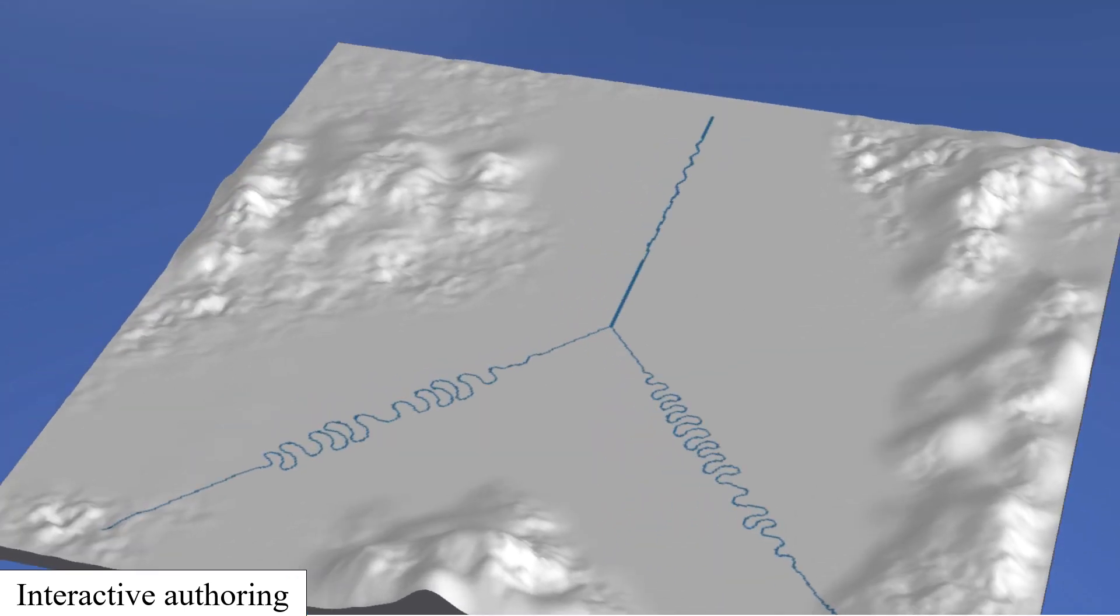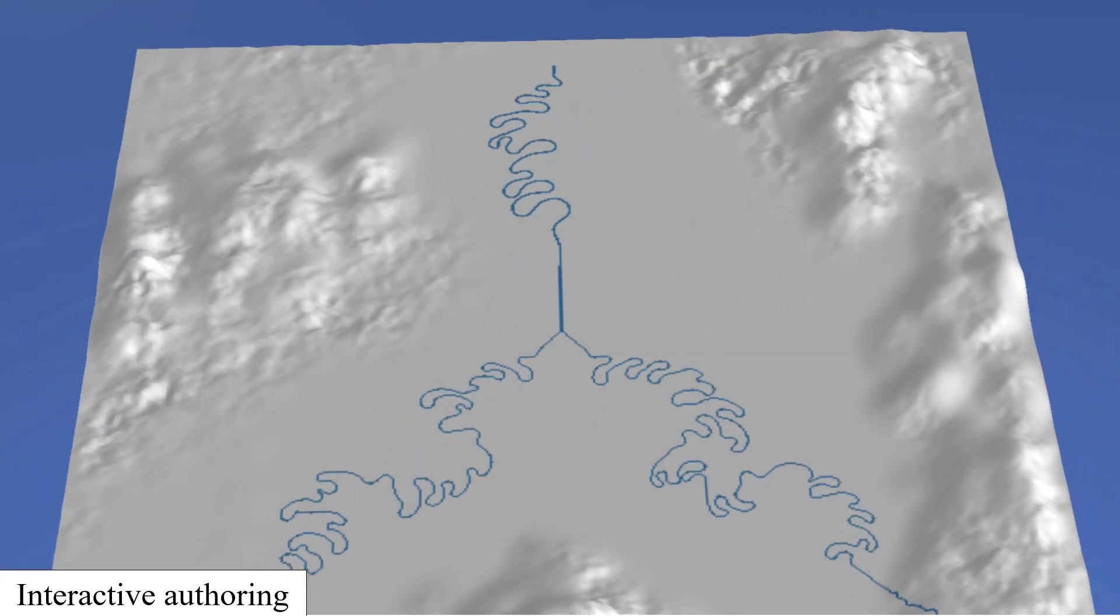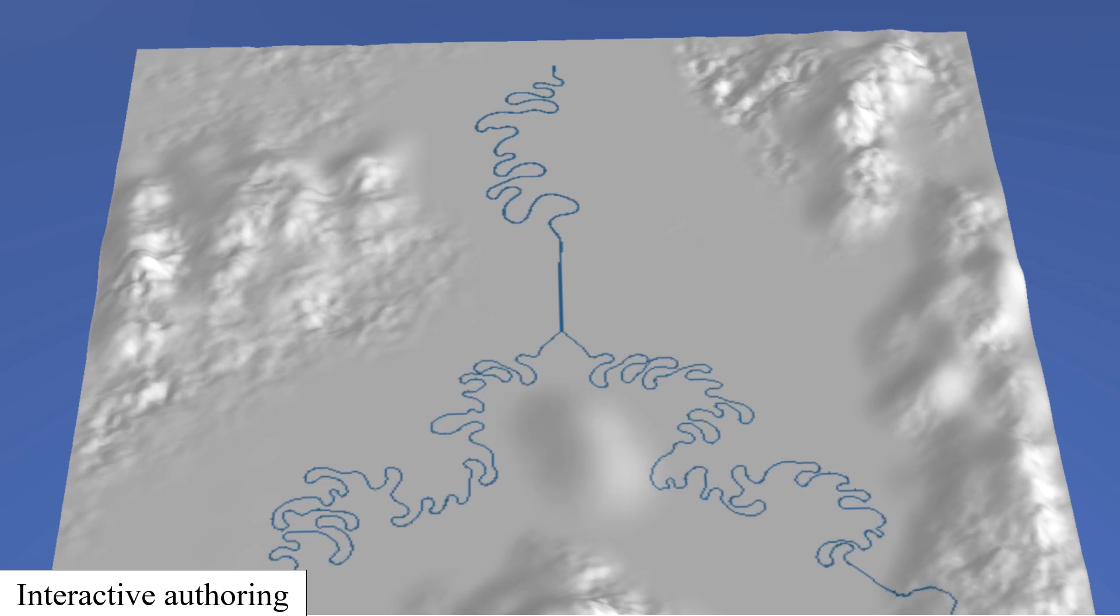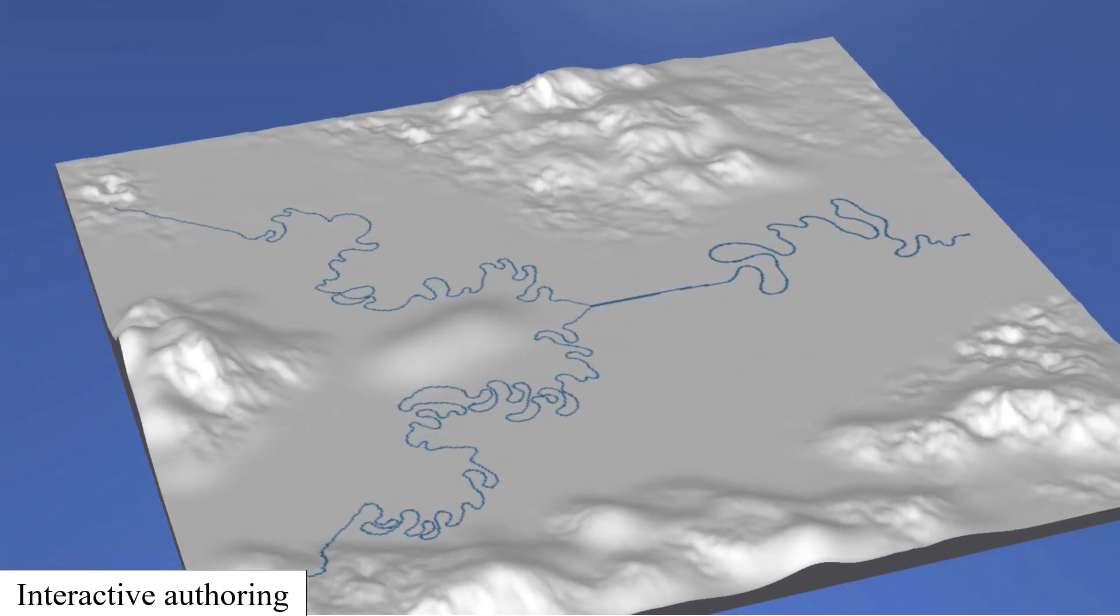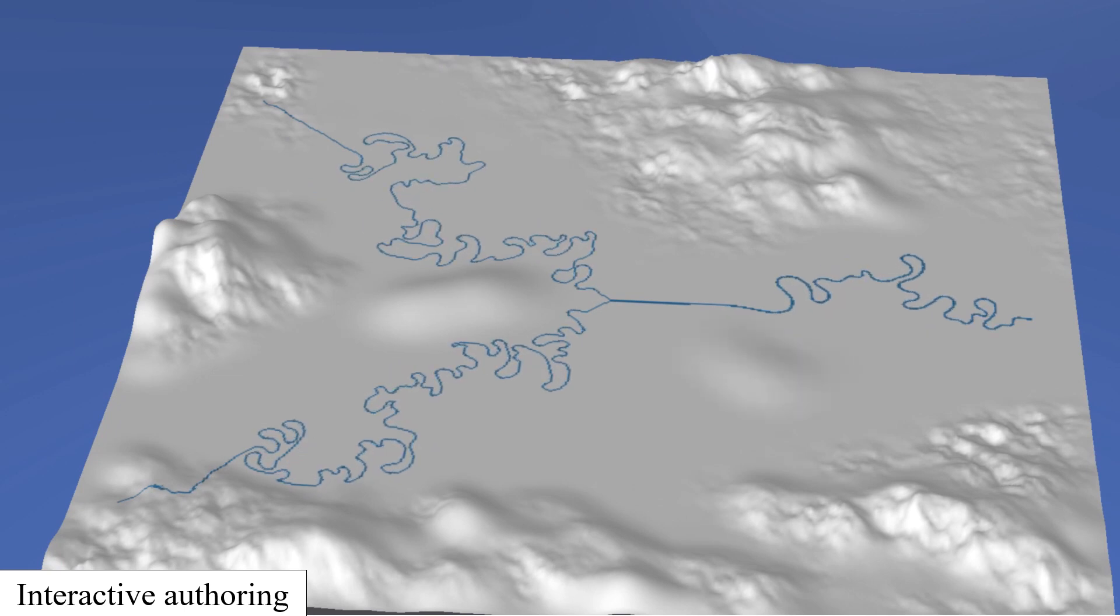Finally, we show an interactive editing session by an experienced user. Here, the user sketched the river network graph and ran the simulation, while simultaneously modifying the relief of the terrain in real time.